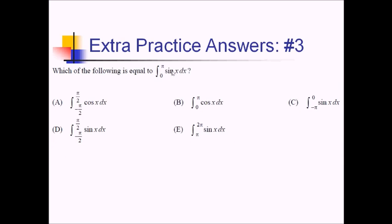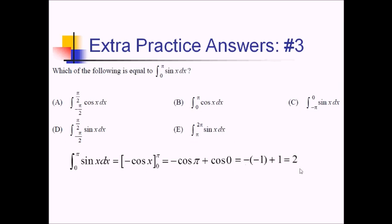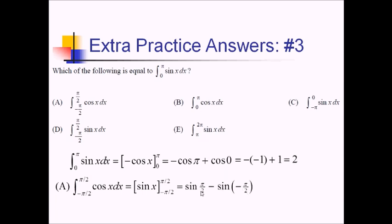Let's verify by computing: the antiderivative of sine is negative cosine, evaluated from 0 to π. That gives negative cosine of π plus cosine of 0. Cosine of π is negative 1, so negative of negative 1 is 1. Cosine of 0 is 1. That adds up to 2. Now checking choice A: antiderivative of cosine is sine, evaluated from negative π/2 to π/2. That gives sine of π/2 minus sine of negative π/2, which is 1 minus negative 1 equals 2. This matches, so choice A is our answer.